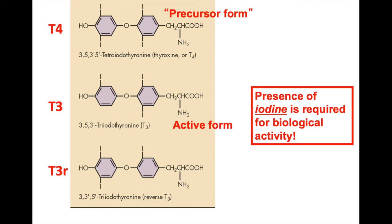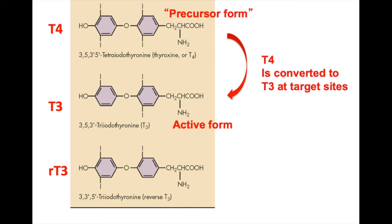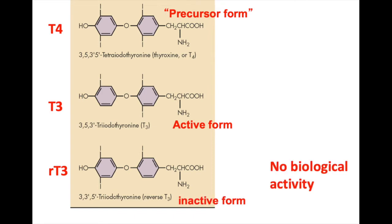The three forms have distinct roles: T4 is the precursor form and is not very active. T3 has much higher activity than T4, and these are converted from one to the other at target sites. T4 is the predominant form released, T3 is the active form, and reverse T3 has no biological activity — it is simply an inactive form.